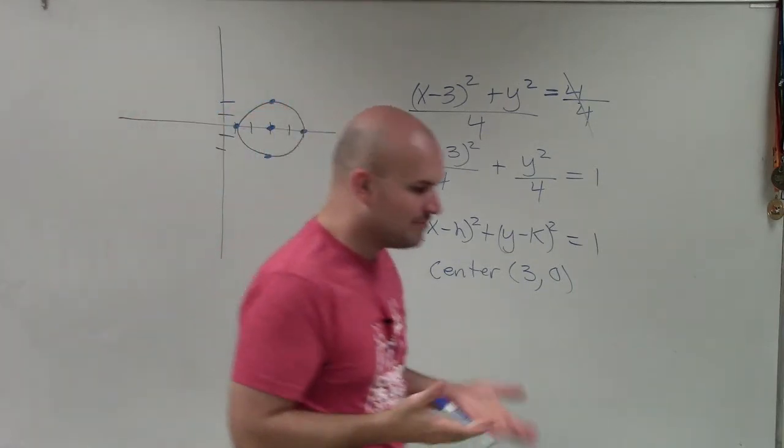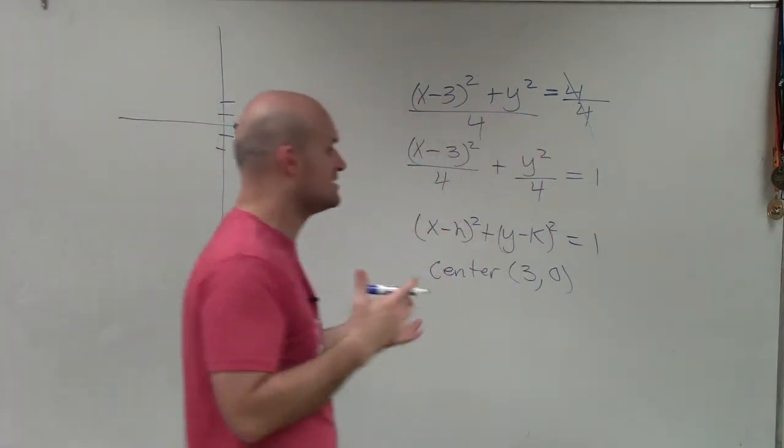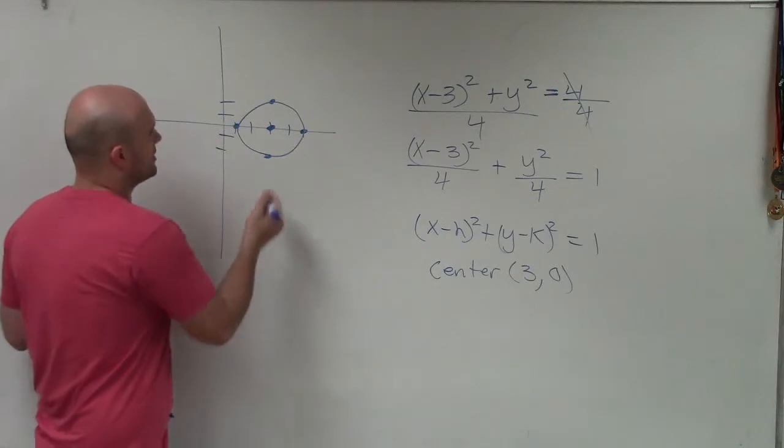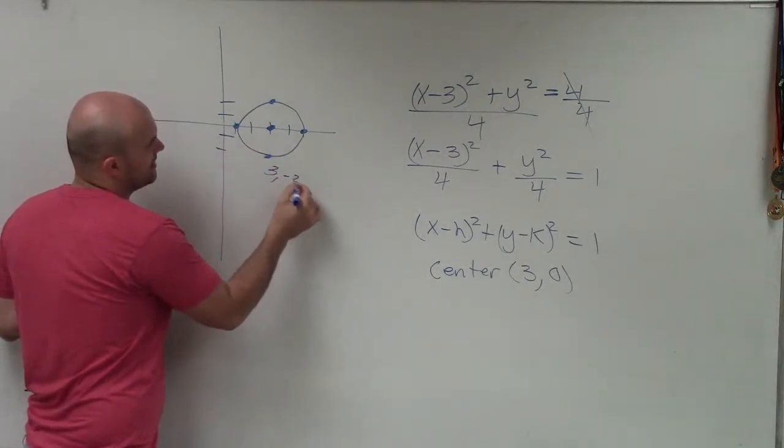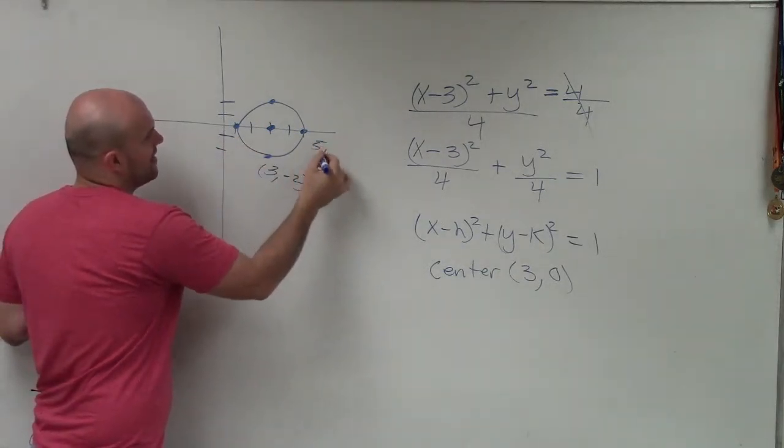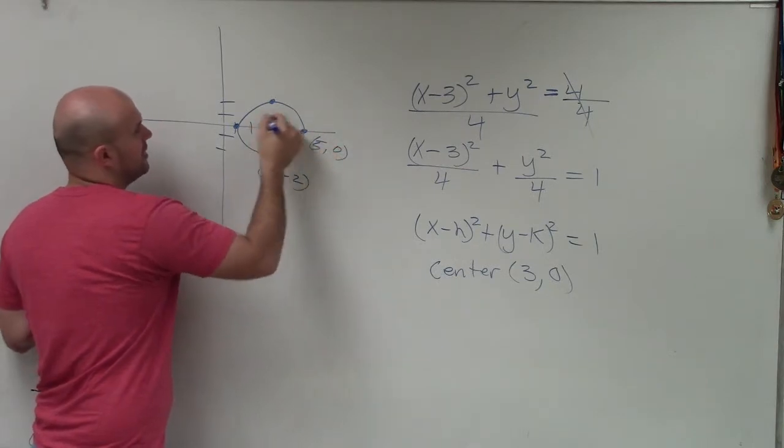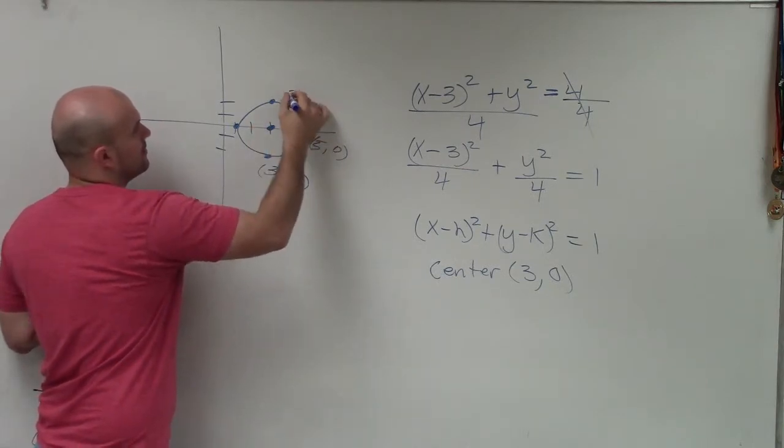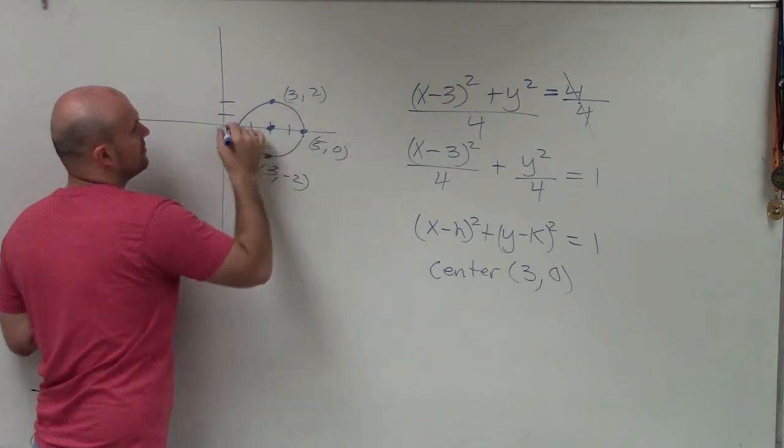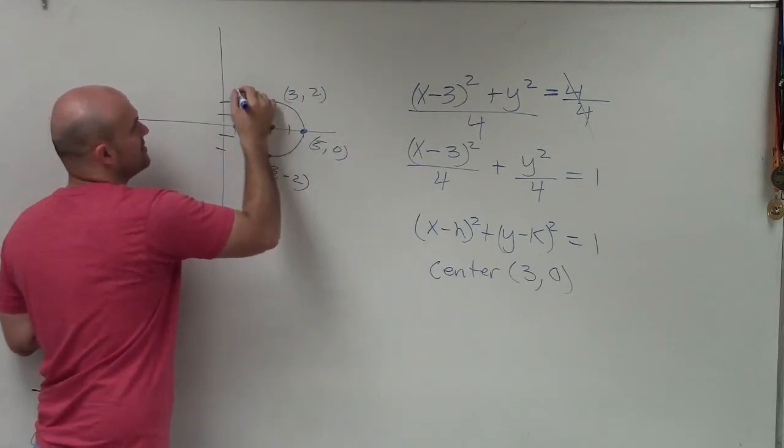And since there's no major vertices, these are all just kind of points on our line. But we can go ahead and label these. So it would be 3, negative 2, 5, 0, 3, 2, and 1, 0.